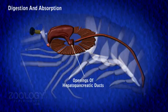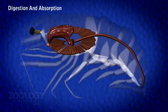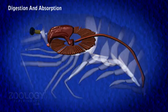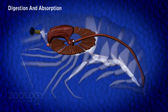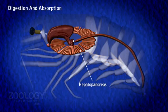As food passes over the setose plate, the moving bristles of the combed plate cut it into smaller particles. The semi-liquid and semi-digested food is filtered through the bristles of the combed plates into lateral grooves below, where it is carried into the ventral chamber of the pyloric stomach through the cardiopyloric aperture. Here, the digested and liquefied food is filtered again through the pyloric filtering aperture. Thus, only the finest food particles enter through the hepatopancreatic duct into the large digestive gland, where they are hydrolyzed and absorbed.